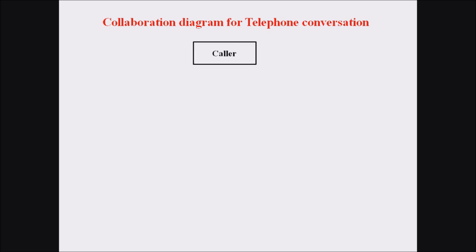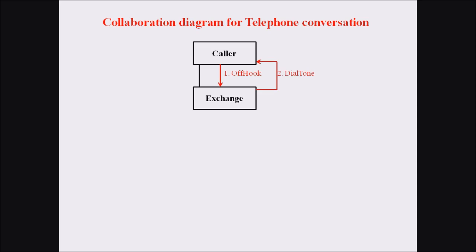Now we go to the second example — the collaboration diagram for a telephone conversation. For every communication there is a person known as caller. Caller is an object, communicating and linked with a second object named exchange. The message between the caller and the exchange is off hook — the caller dials a contact number. The exchange returns a dial tone to the caller when the phone is off hooked.